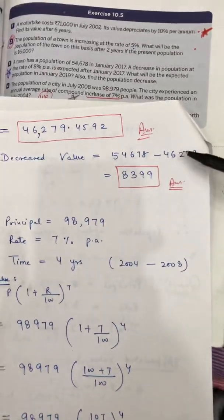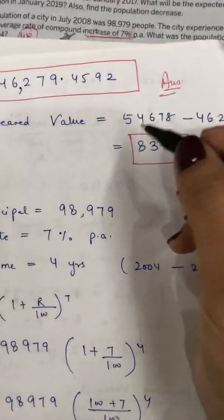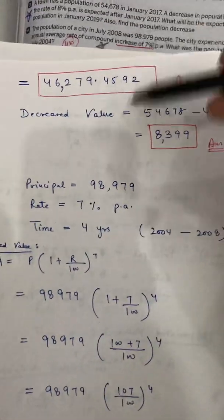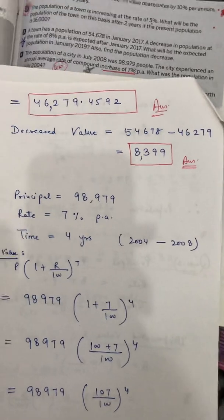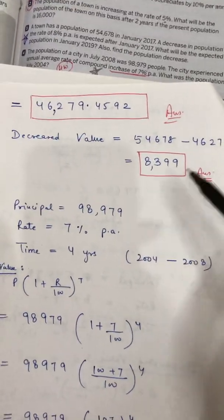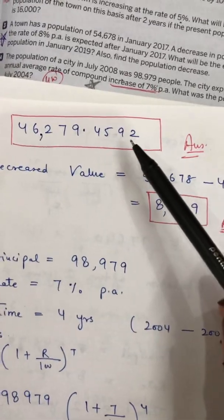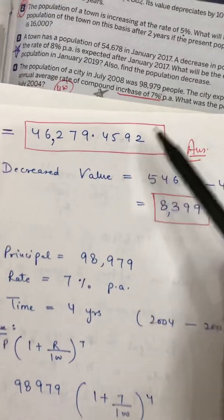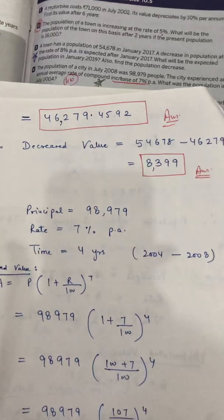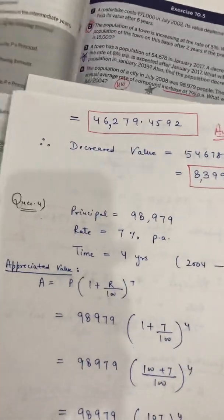To find the decreased population, subtract: 54,678 − 46,279 = 8,399. So the population decreased by 8,399, and the population in 2019 is 46,279. Both are the answers for this question.